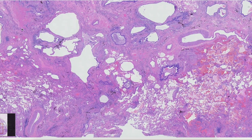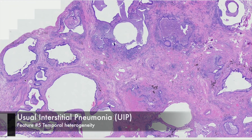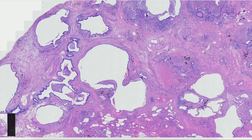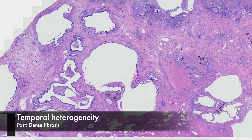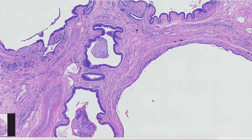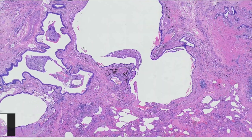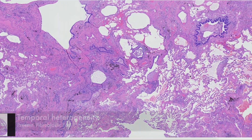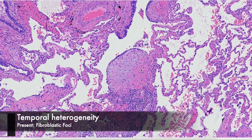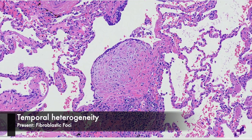Temporal heterogeneity is a bit harder to wrap your head around. It means you have different phases of the process ongoing in a single section — the past, present, and future. The past being areas of dense fibrosis with architecturally distorted spaces and microscopic honeycomb change. The present being more active areas of fibroblasts, called fibroblastic foci (or fibroblastic focus, singular).